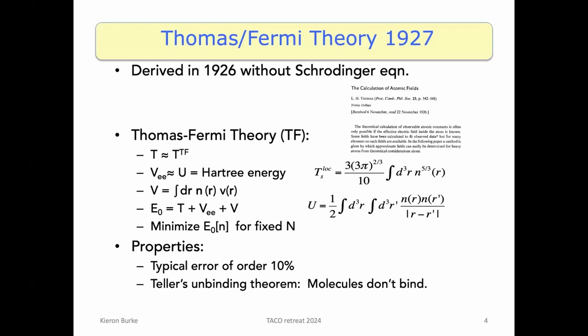He writes down a very crude Thomas-Fermi theory, and that theory is remarkably accurate for such a simple theory. It gives you total energies within 10 percent, but a slight problem with it is that when you bring two atoms together the energy does not go down, so molecules don't bind, which makes it very hard to get a job in the chemistry department.